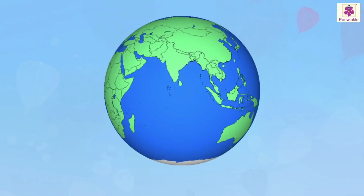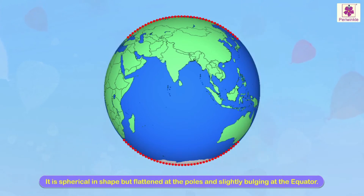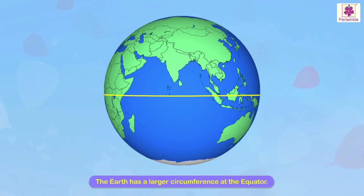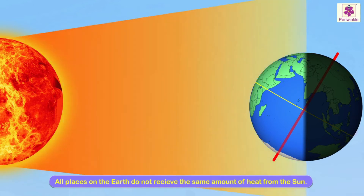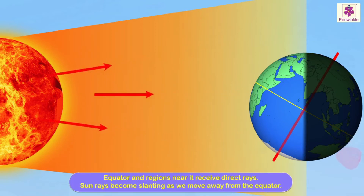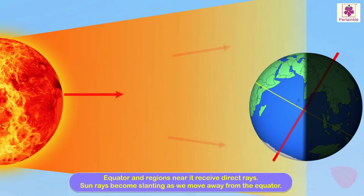The earth is a huge planet. It is spherical in shape, but flattened at the poles and slightly bulging at the equator. So the earth has a larger circumference at the equator. Naturally, all places on the earth do not receive the same amount of heat from the sun. While the equator and regions near it receive direct rays, sun rays become more and more slanting as we move away from the equator and towards the poles.